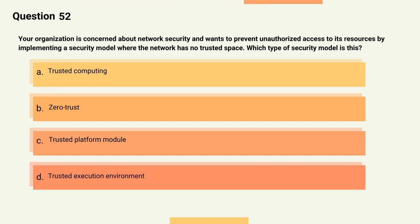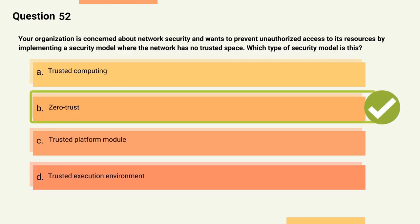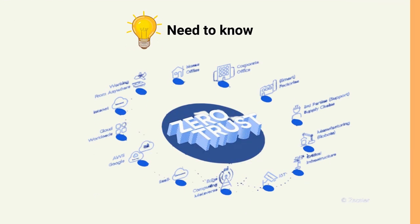Question 52: Your organization wants to prevent unauthorized access by implementing a security model where the network has no trusted space. Which type of security model is this? Options: A) Trusted computing, B) Zero trust, C) Trusted platform module, D) Trusted execution environment. The correct answer is Option B, Zero trust. Explanation: A zero trust security model is one where the network has no trusted space and security is managed at each possible level, representing the most granular asset.